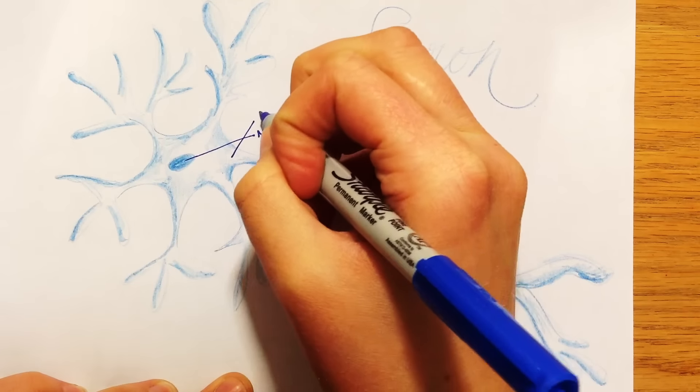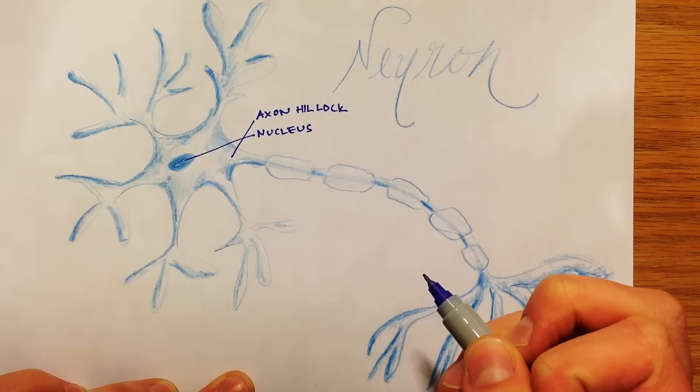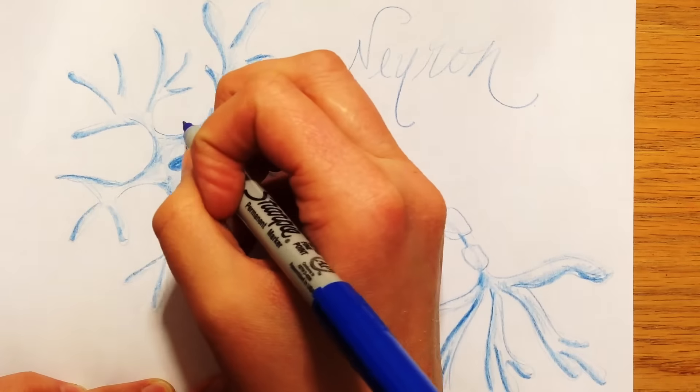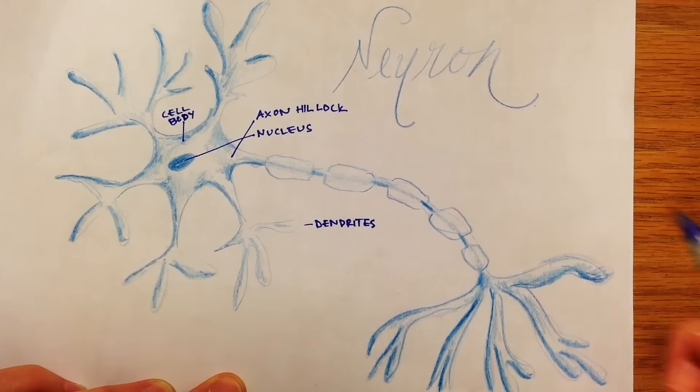So we have the nucleus in the center, we have the axon hillock which is the base of the body leading to the axon, the dendrites which are coming off of the cell body, the cell body itself.